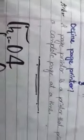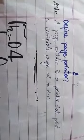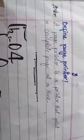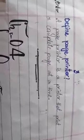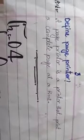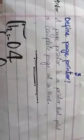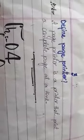The last question of this chapter: define page printer. We have already read about the page printer. A page printer is a printer that prints a complete page at a time. That means in one time, a complete page prints. That is called a page printer.